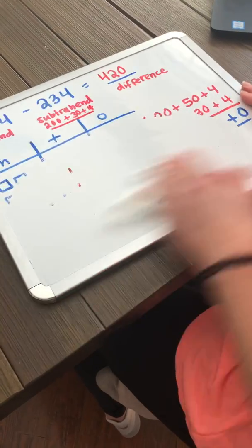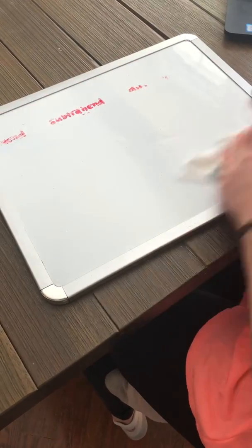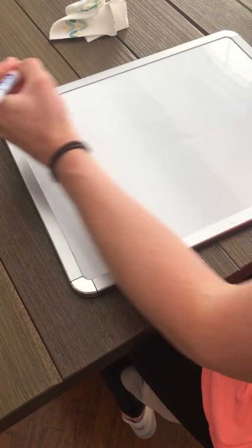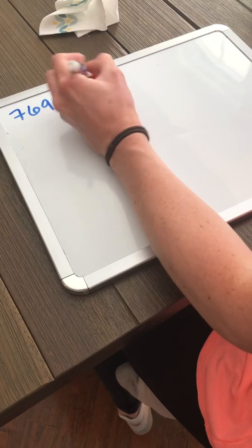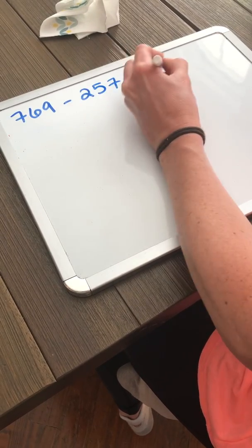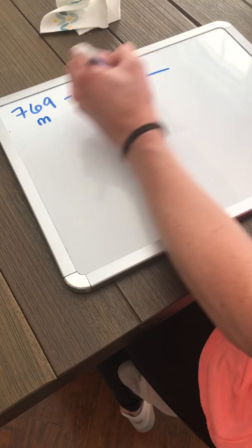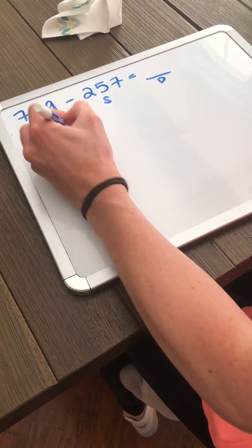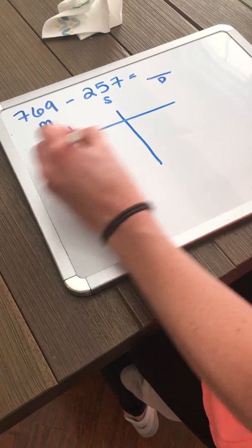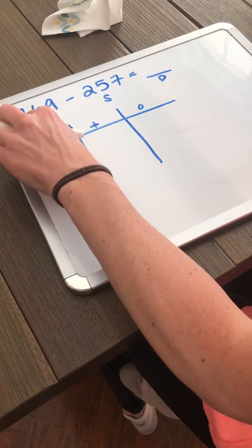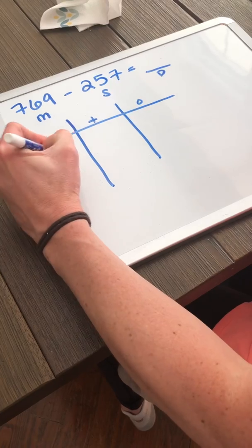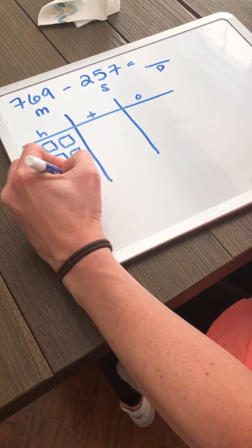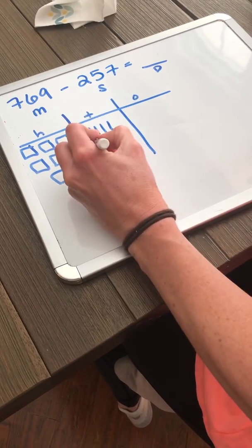Let's do one more. 769 minus 257. This is my minuend and my subtrahend, and this is my difference. I want to represent my minuend. So I've got ones, tens, hundreds. So I want to represent 769.